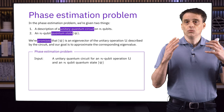It's worth noticing that the state of the bottom n qubits remains the eigenvector psi after the controlled-u operation, giving us the opportunity to use it again. After the second Hadamard gate is performed, we get the final state just prior to measurement. If we measure the top qubit, the probability of outcome 0 is cos²(πθ) and the probability of outcome 1 is sin²(πθ), which sum to 1 as expected.